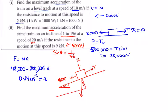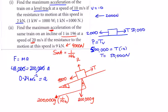Resolving parallel to the hill, the weight component down the slope is 200,000g times sine a. Since sine a equals 1/196, that gives 200,000 times 9.8 divided by 196, which equals 10,000 newtons acting down the incline.